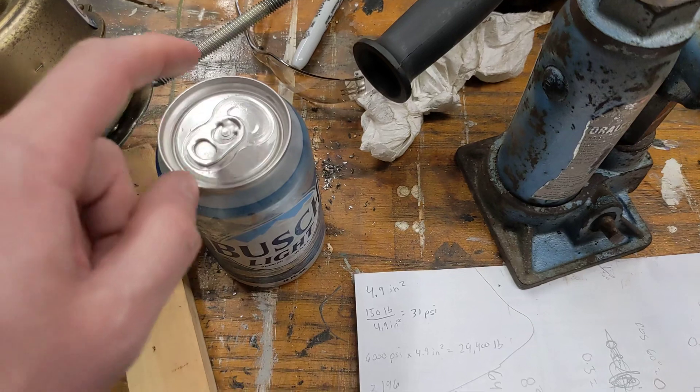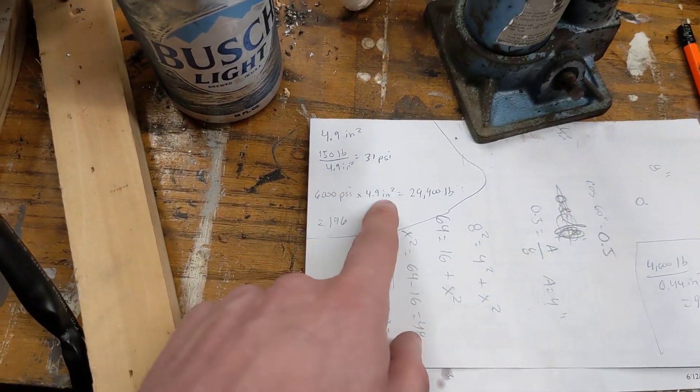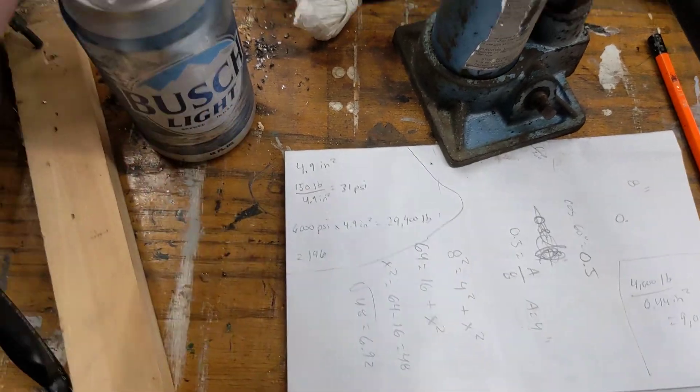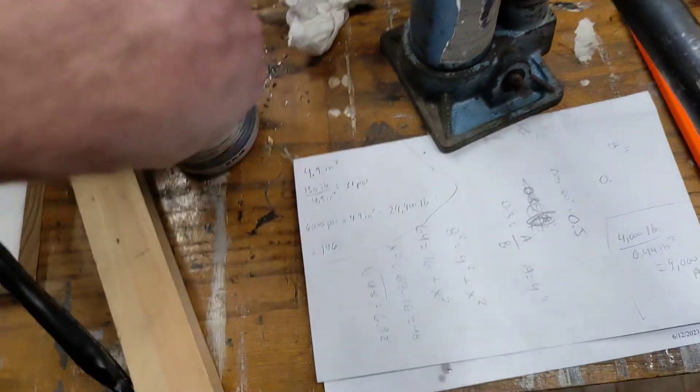And if you have the surface area, 4.9 square inches, multiply the pound per square inch by the number of square inches, it gives you the force that that surface area experiences.